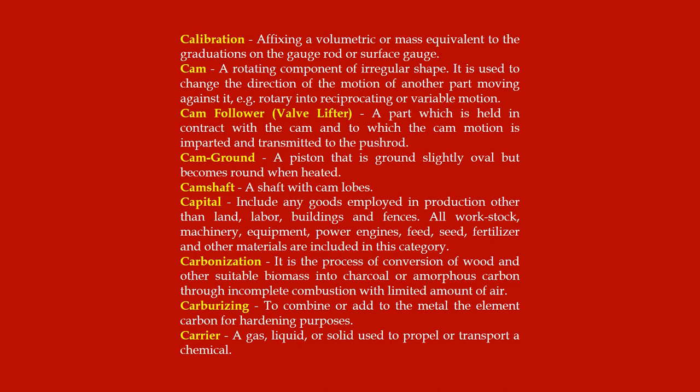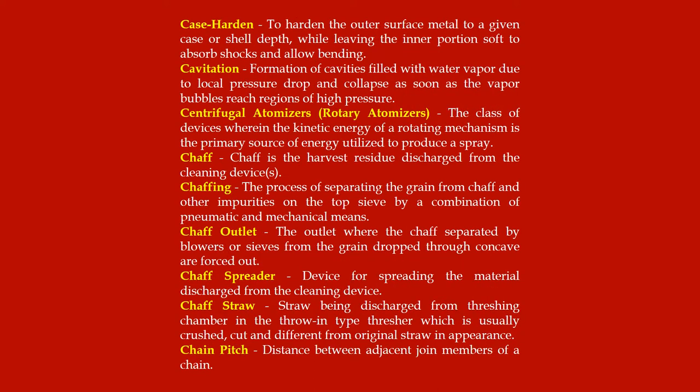Carbonization: the process of conversion of wood and other suitable biomass into charcoal or amorphous carbon through incomplete combustion with a limited amount of air. Carburizing: to combine or add to the metal the element carbon for hardening purposes. Carrier: a gas, liquid or solid used to propel or transport a chemical. Case harden: to harden the outer surface of metal to a given case or shell depth while leaving the inner portion soft to absorb shocks and allow bending.